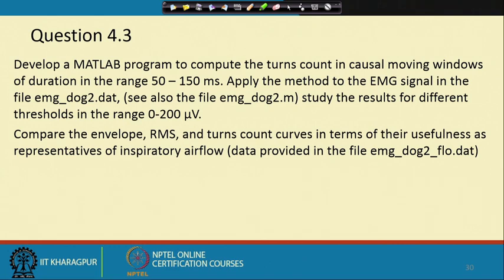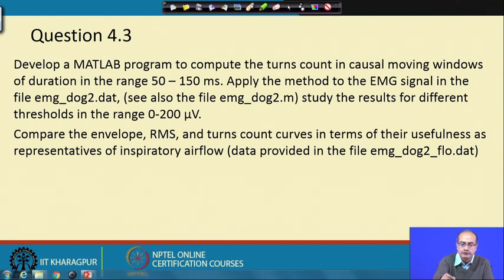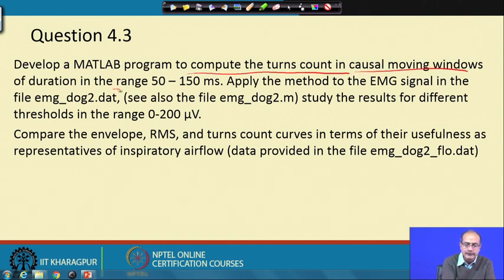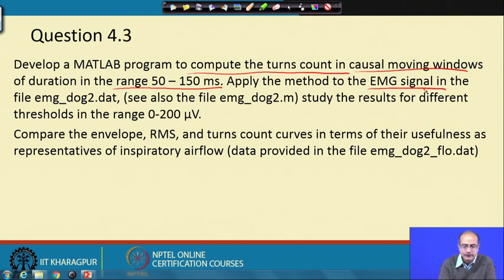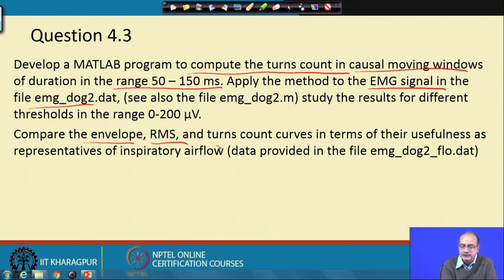We will take the third assignment of the fourth tutorial. Here, we have to compute the turns count in a causal window, between the range of 50 to 150 milliseconds, and apply this method on the EMG signal. We also study the effect of different thresholds, compare the envelopes, RMS, and turns count in terms of their usefulness, along with the inspiratory air flow, which gives the amount of activity that is done.